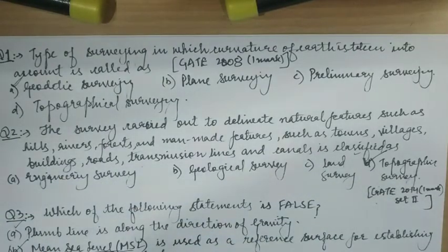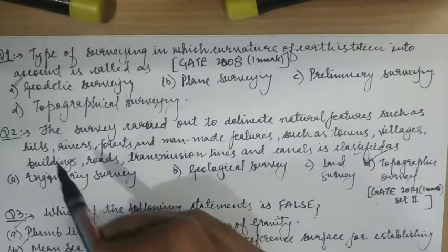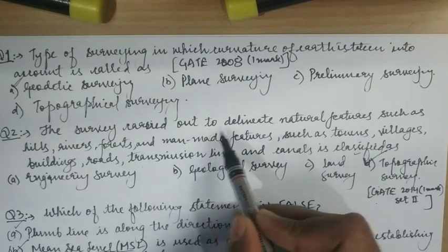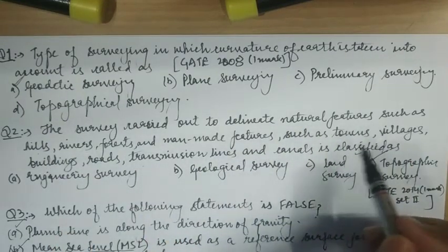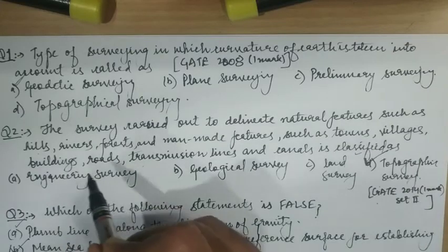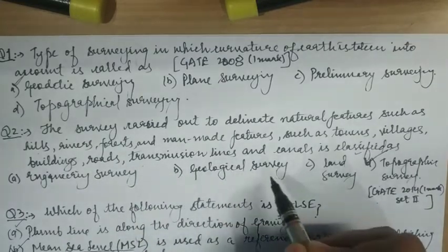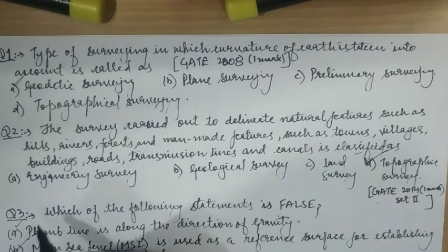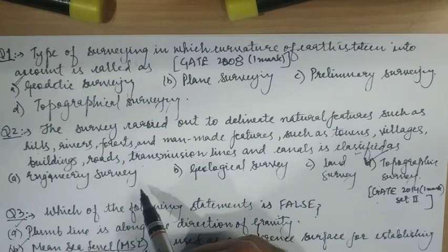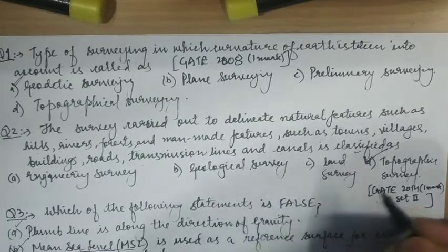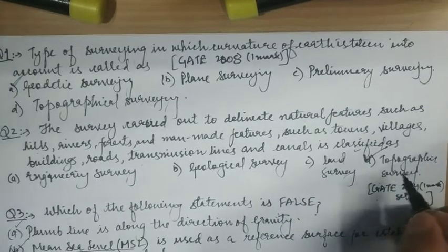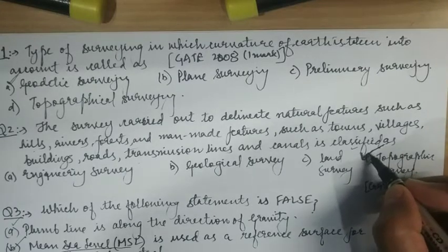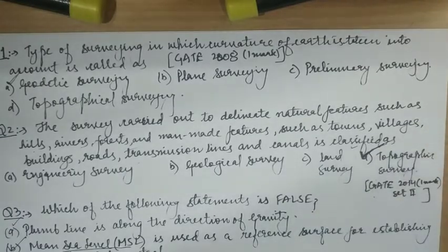Second question from GATE 2014 Set 2 (one mark): 'The survey carried out to delineate natural features such as hills, rivers, forests and man-made features such as towns, villages, buildings, roads, transmission lines, and canals is classified as —' Options: engineering survey, geological survey, land survey, topographical survey. As discussed, this comes under the category of topographical survey.